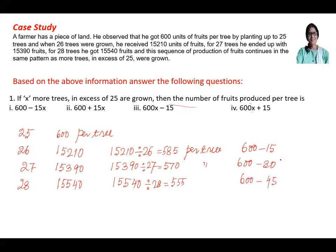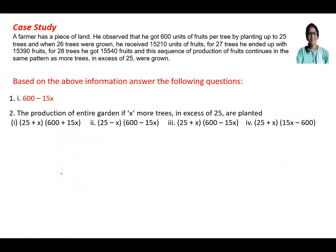So what does it mean? It means for each additional tree, we get 15 less fruits per tree. So the formula will be 600 minus 15×1, 15×2, 15×3, and so on. So the answer will be 600 minus 15x. It is decreasing. So option (a) is the answer for question one.